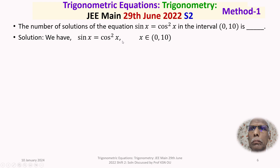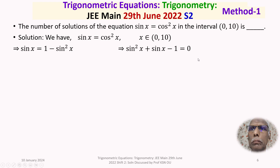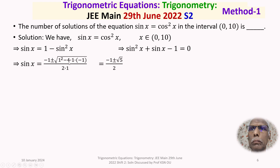We write cos²x in terms of sin x as 1 − sin²x. The equation becomes sin x = 1 − sin²x, which implies sin²x + sin x − 1 = 0. This is a quadratic equation in sin x. Using the quadratic formula, sin x = (−b ± √(b²−4ac)) / 2a, which gives sin x = (−1 ± √5) / 2.